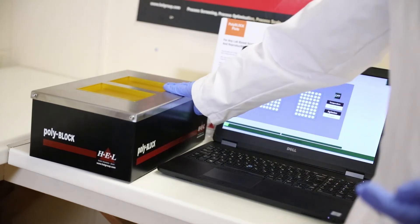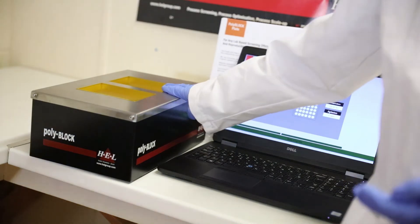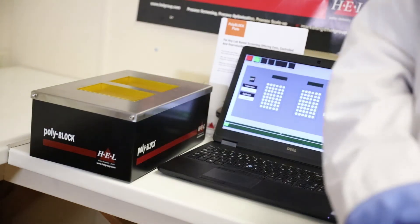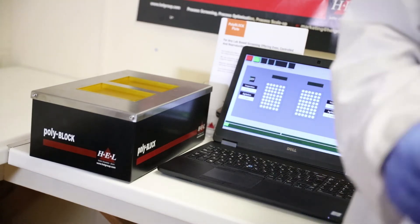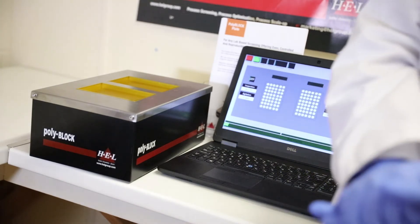Each zone has a different stir speed that you can set and a different temperature you can set. Maximum temperature is up to 190 degrees C, although we often cap that in the software because people are using plastic plates and you don't want to melt them.